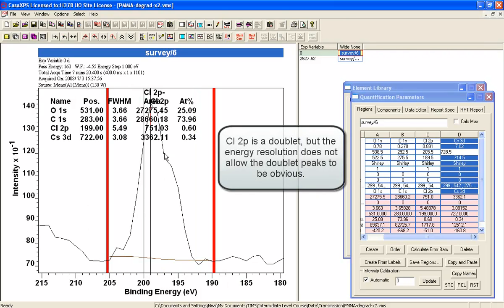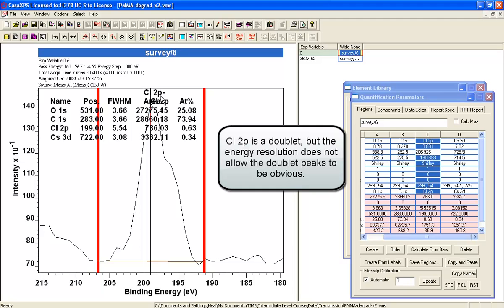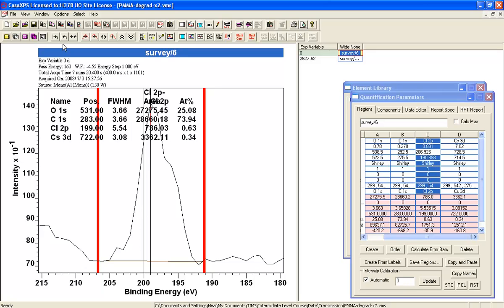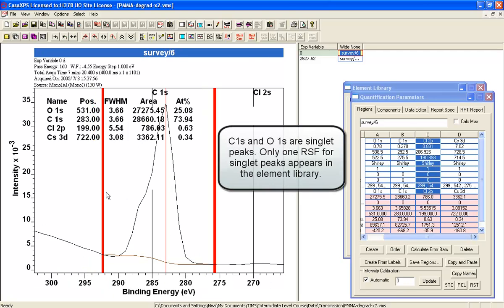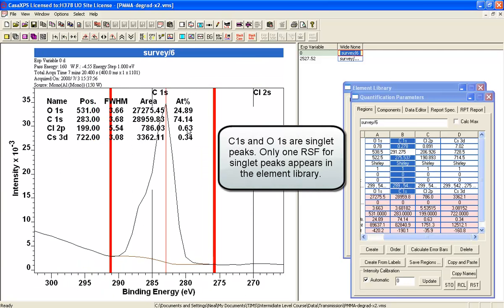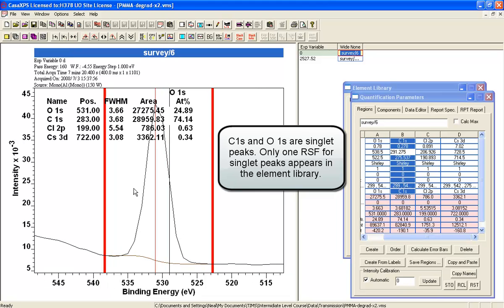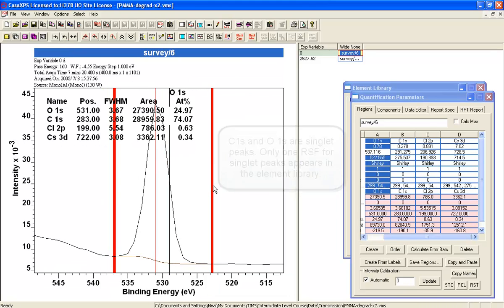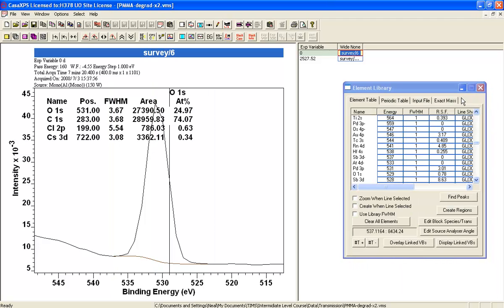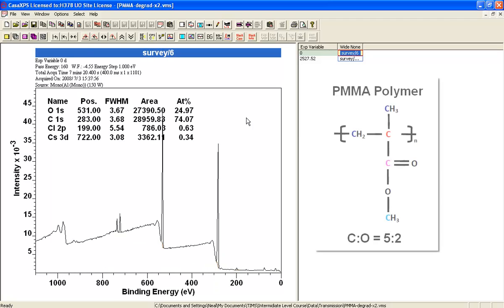The next one is chlorine 2P, which is both parts of the doublet, so we need the full RSF here. This is the carbon 1S and the oxygen 1S. Now we have the quantification information that we need to assess this.